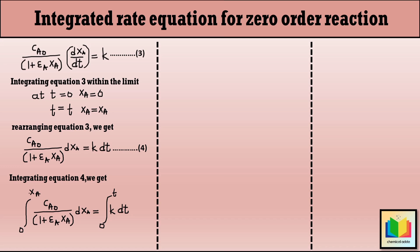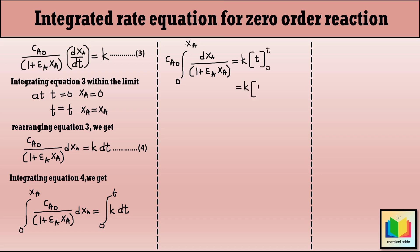On the left side of the equation, C_A0 is the initial concentration of A and it is constant, hence we can take it out from the integration sign. On the right side of the equation we can apply the integration formula. After solving the right side, we get: C_A0 times integration from zero to X_A of dX_A divided by (1 plus epsilon_A X_A) equals K into T.